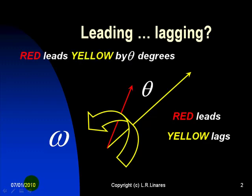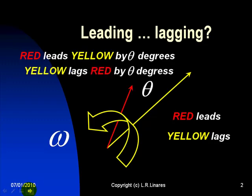We say more properly, red leads yellow by theta degrees, or, which is equivalent, yellow lags behind red by theta degrees.